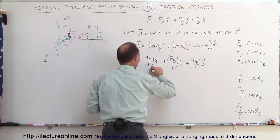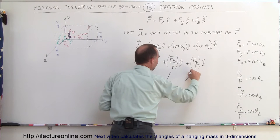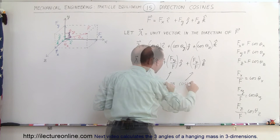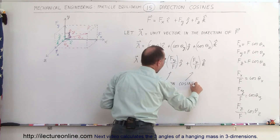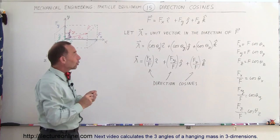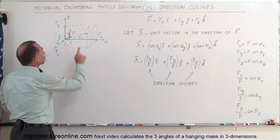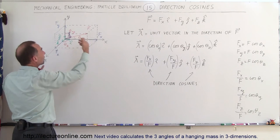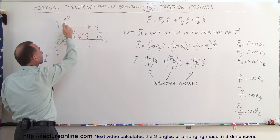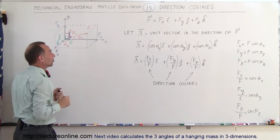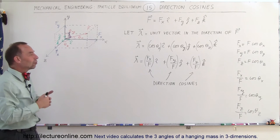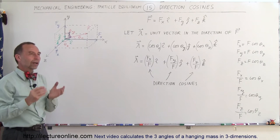Let me denote that because that's the important part — these are called the direction cosines. Ultimately, the direction cosines are simply the cosines of the angles between the vector in three dimensions and the x-axis, between the vector and the y-axis, and between the vector and the z-axis. You take the cosine of those angles and those are considered the direction cosines.